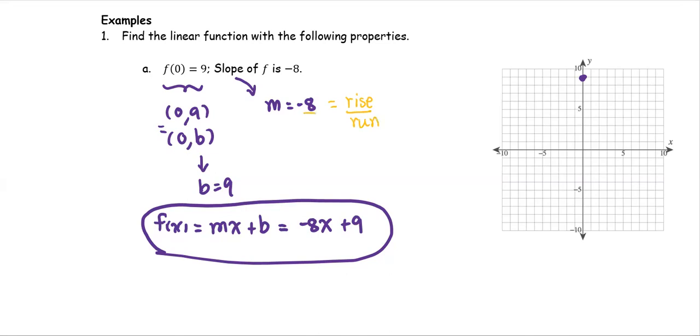Negative 8 means -8/1. When we look for another point on the line, -8 means go down 8 units and then go over to the right 1 unit.